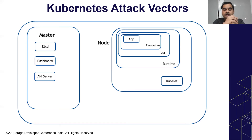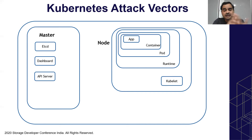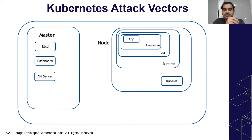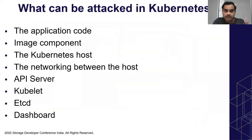If they're physically insecure — for example, if your master is running an SSH service or has an open port — then the master can be compromised. An attacker can bring down the master, bring down services, or copy etcd data, even without exploiting other Kubernetes vulnerabilities. Physically protecting the master and the node are very important. The attack vectors here are attacking etcd, attacking the dashboard, and attacking the API server.